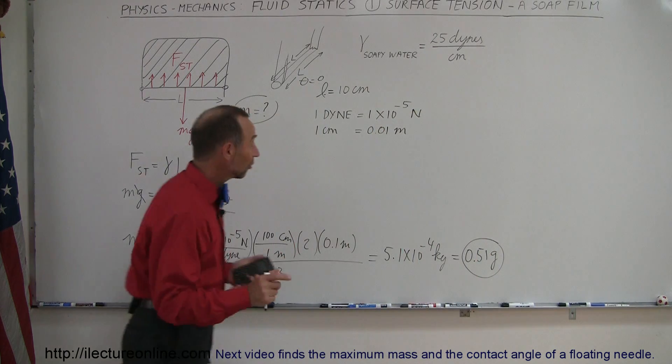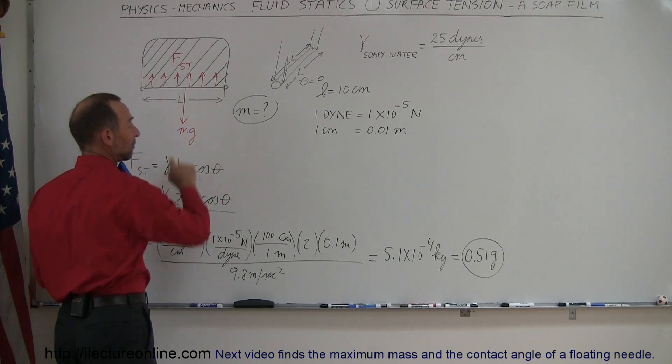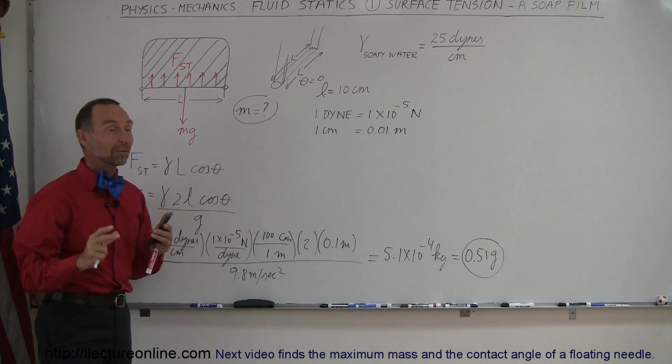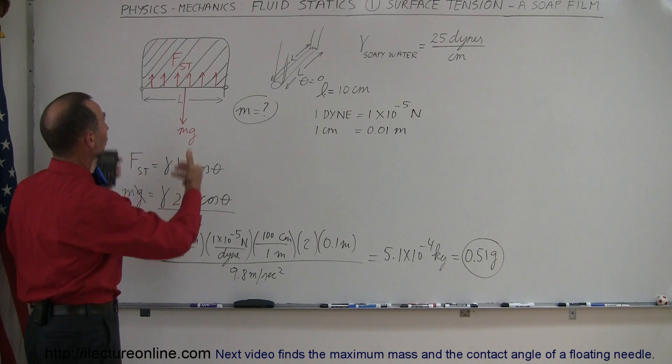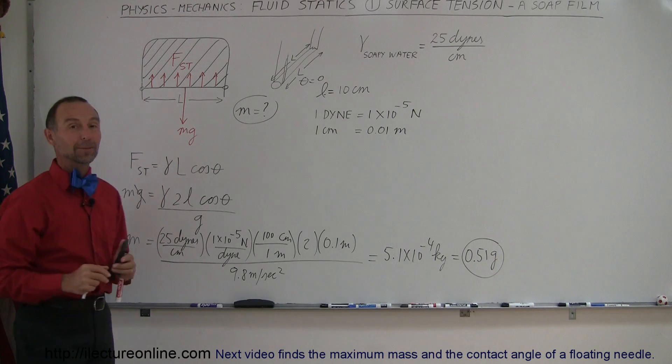So that means that if a wire is suspended from a device like this with a soapy film on it, it will have a mass of 0.51 grams and it will then counterbalance the force caused by the surface tension of the soapy film. And that's how you do a problem like that.